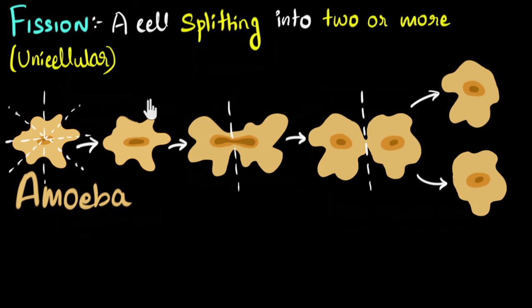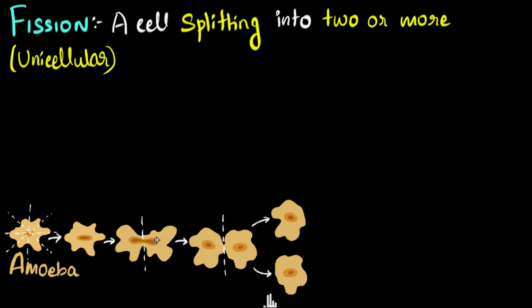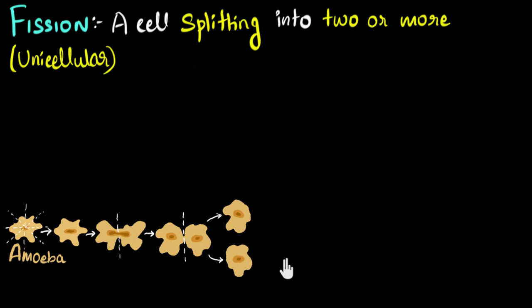But in some other unicellular organisms, we will find that fission happens in a fixed axis. So let me take an example of that.